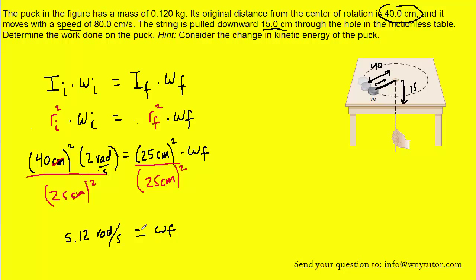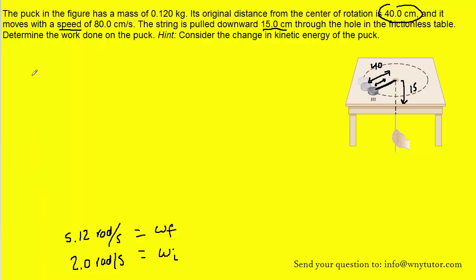Now you might be wondering, why do we care about the final angular speed? Well let's turn to that next. But actually before doing that, let's just remind ourselves that the initial angular speed was 2 radians per second. So it turns out that we're now ready to calculate the work that's being done on the puck, and that's because the work done on the puck is simply equal to the final kinetic energy of the puck minus the initial kinetic energy of the puck.